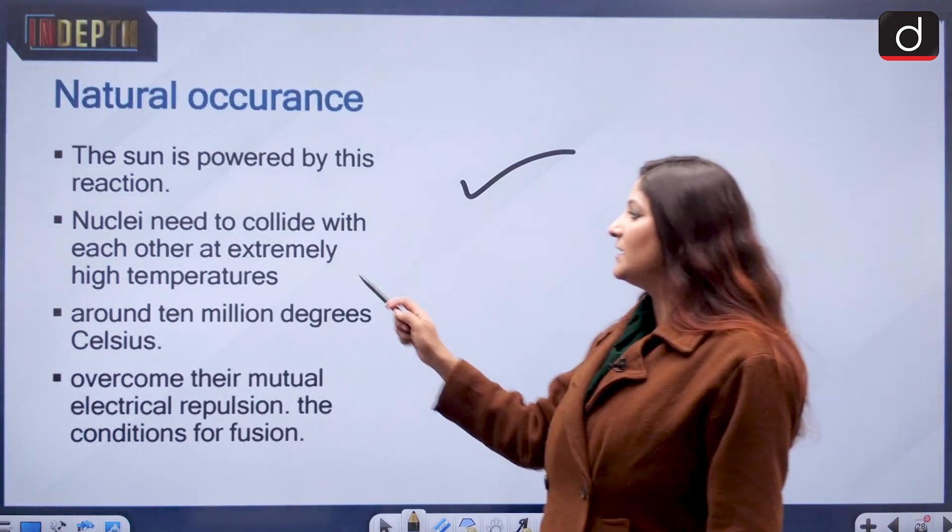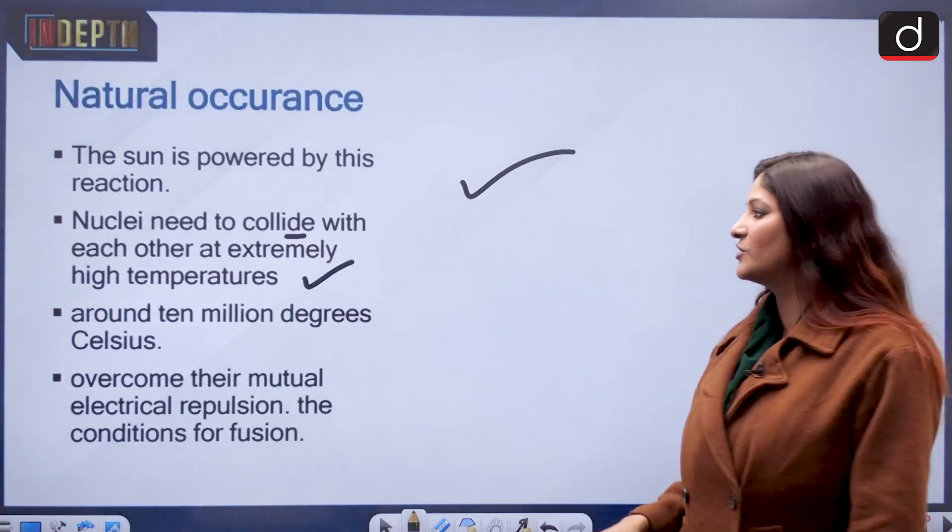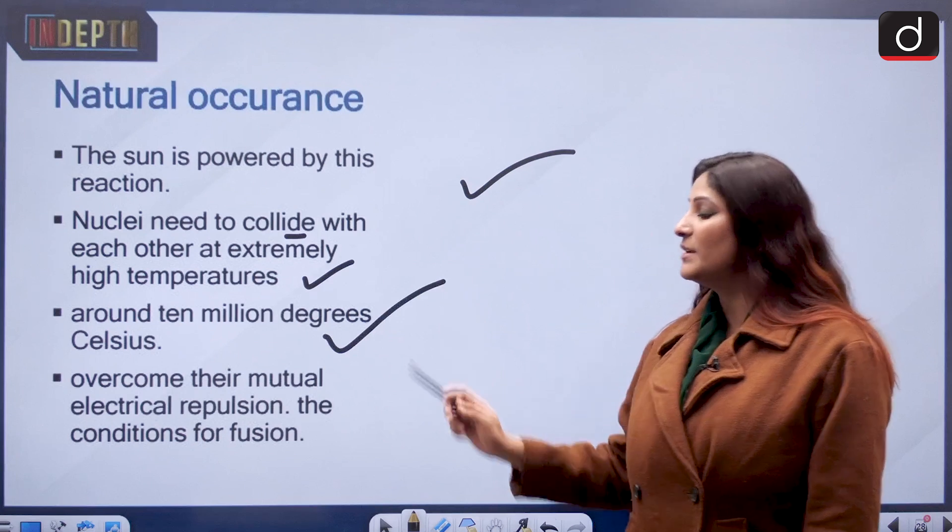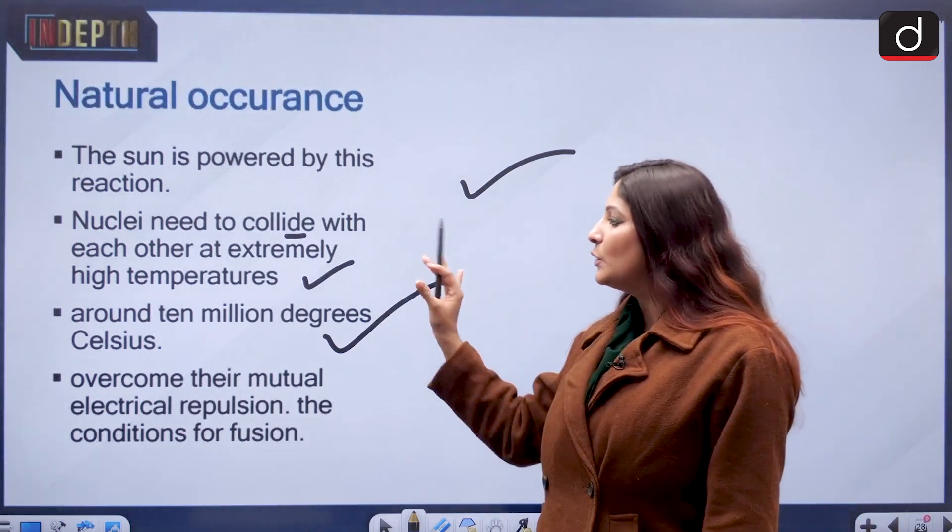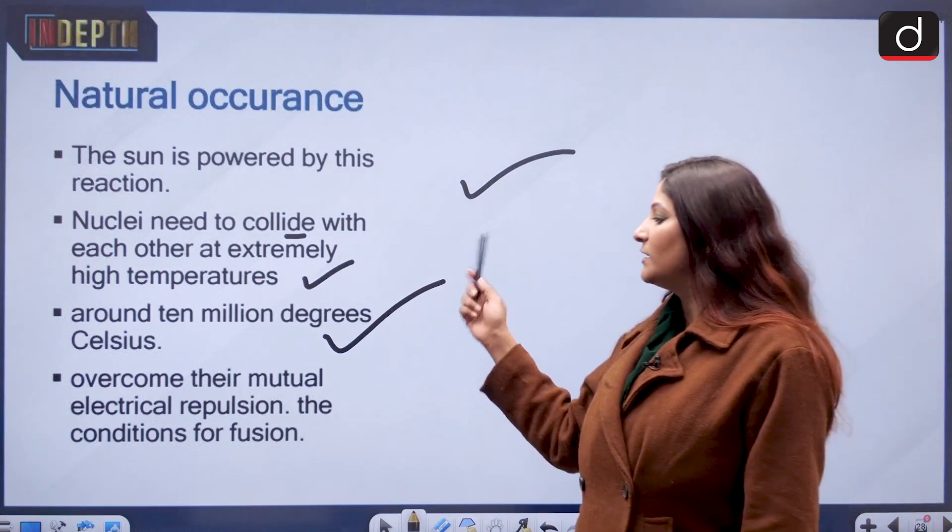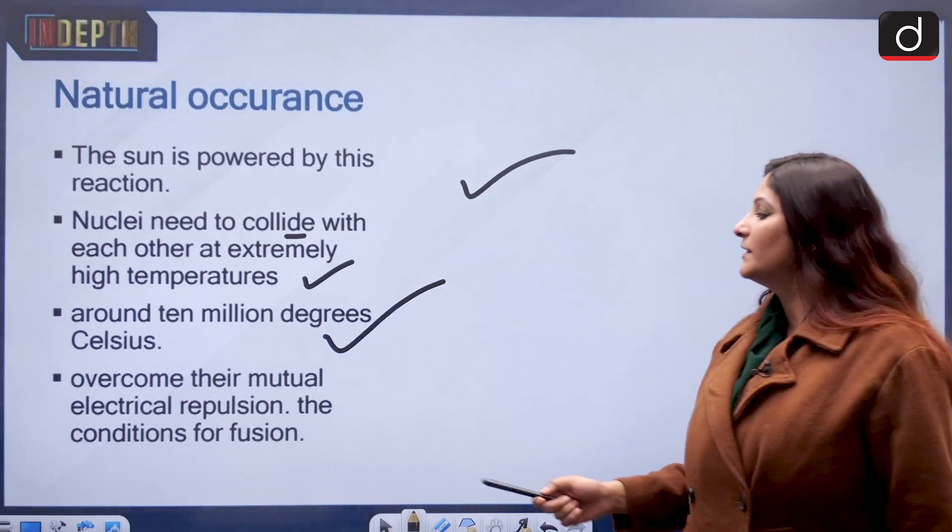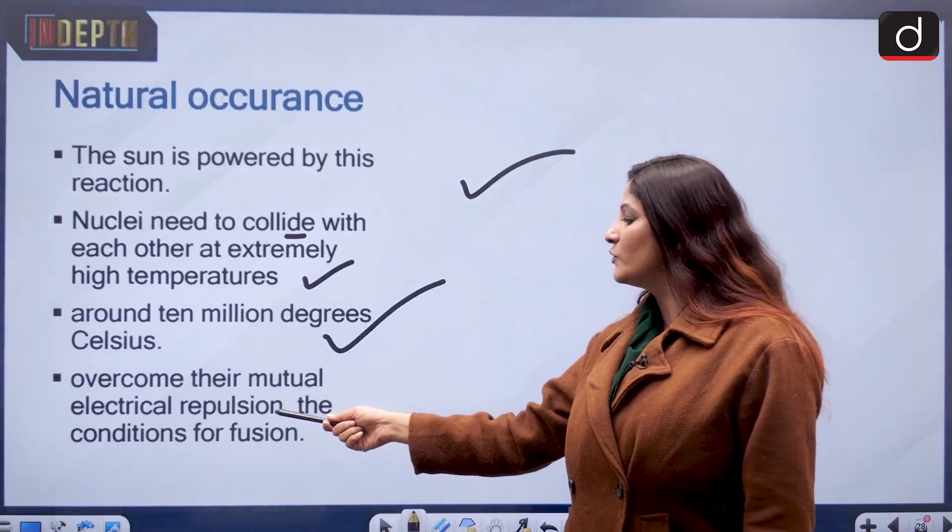The nuclei need to collide at extremely high temperature, around 10 million degrees Celsius, and they need to be very close together so that they can collide with each other. When they do so, they come closer in such a manner that they overcome their neutral electrical repulsion.